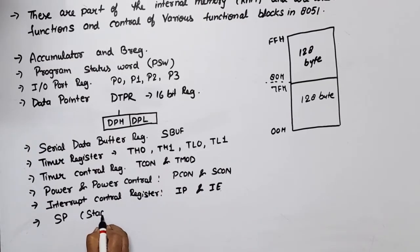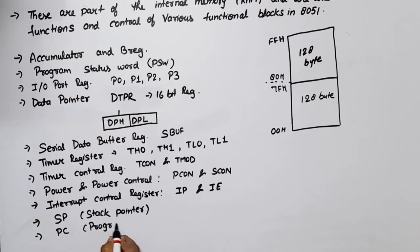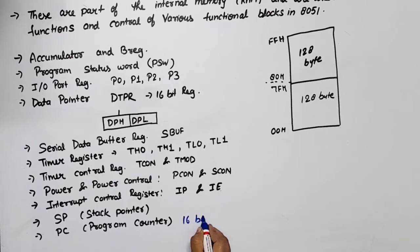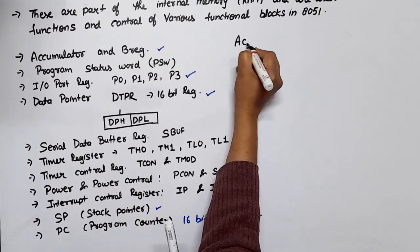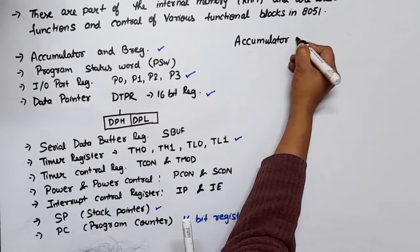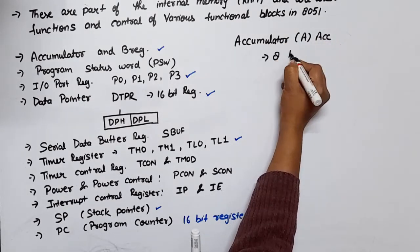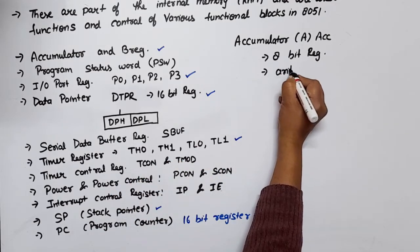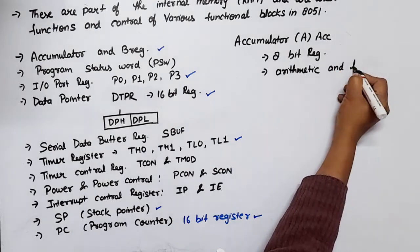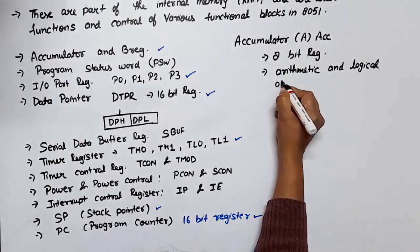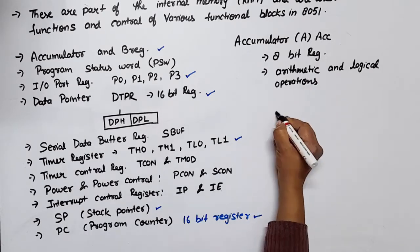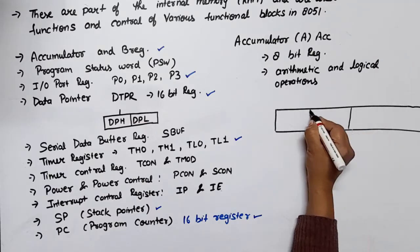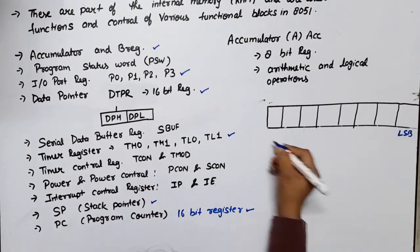Next is the Stack Pointer, and one more is the Program Counter, which is also a 16-bit register. Now we start with the Accumulator. The accumulator is defined by A or ACC. It is an 8-bit register and is used for almost all arithmetic and logical operations. This is the LSB bit and this is the MSB bit.